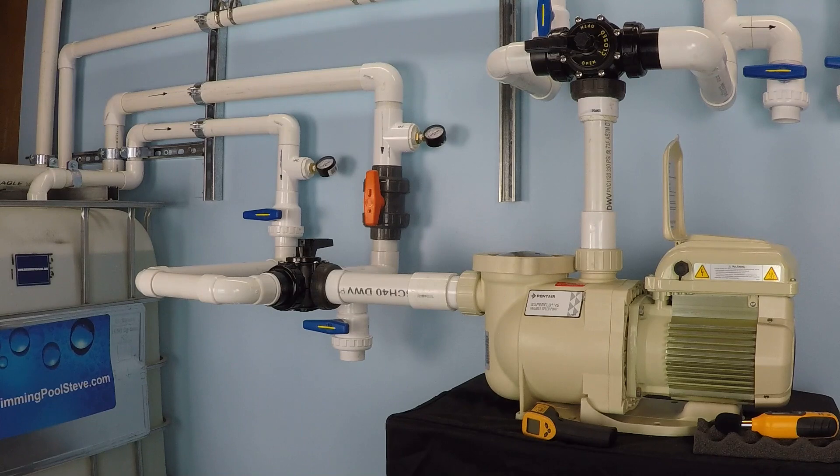This is a bench test of the Pentair Superflow variable speed pump where we will be running this pump with a two inch suction line and an inch and a half return line. We will be monitoring the flow rate, RPM, and electrical consumption under these conditions.